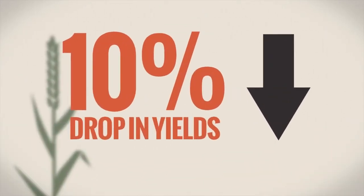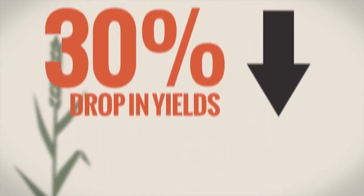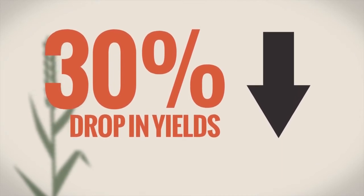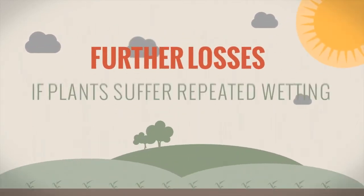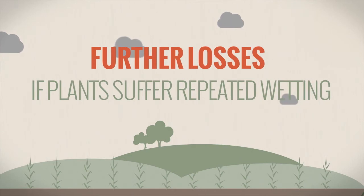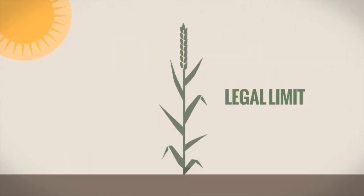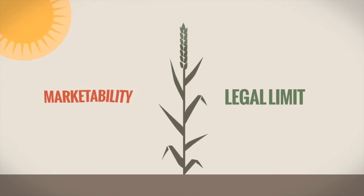In typical years, growers with infected crops can expect a 10% drop in yields. However, in high disease situations, losses can be up to 30%. Further losses can be experienced if Fusarium-infected plants suffer repeated wetting of the ear during grain fill, as this can lead to high levels of mycotoxins forming in crops. Should these exceed legal limits for human consumption or EU guidance values for animal consumption, the marketability of the crop will be affected.